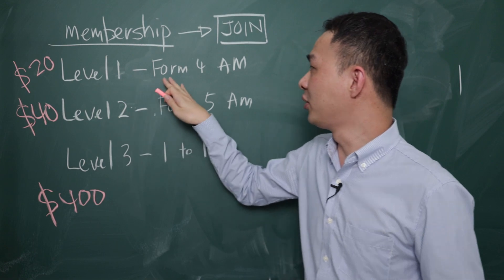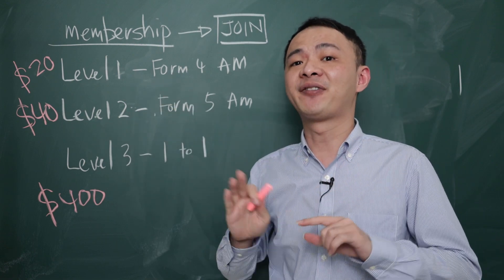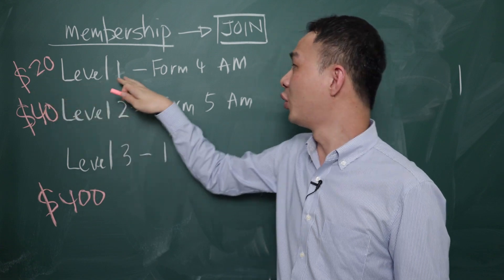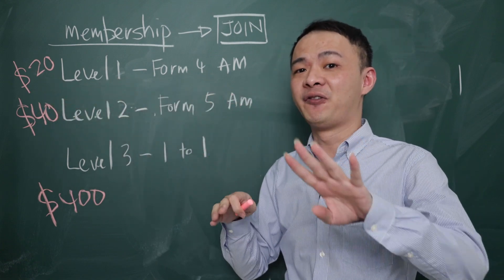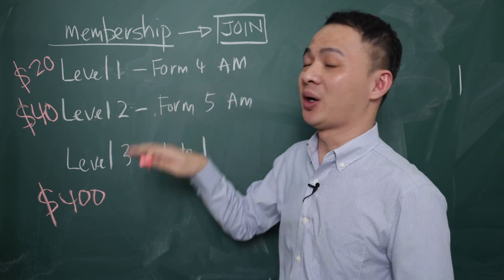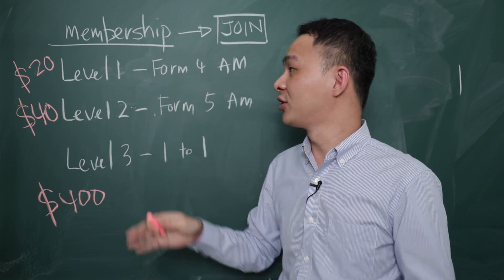So for level 1, what I put is the Form 4 MF classes. So when you sign up for the RM20 per month, you will have 4 Form 4 MF classes, and each class is about 1 hour. So basically, you have like 4 hours per month.